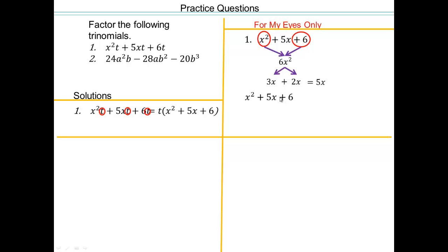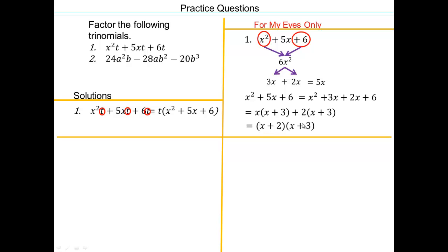Now rewrite the polynomial. Between the first two terms, pull out an x to get x plus 3. You want x plus 3 in the second group too, so put a 2 outside — because plus 2 times x gives 2x, and plus 2 times plus 3 gives plus 6. So the factors are x plus 2 times x plus 3. The t carries through, giving you t times x plus 2 times x plus 3.